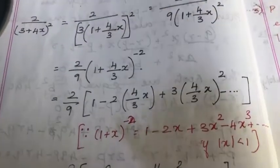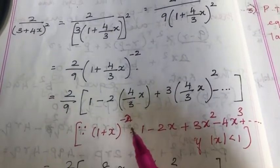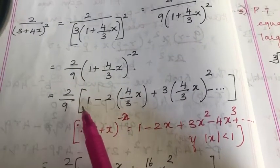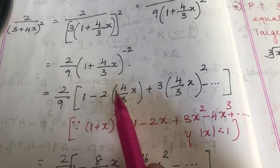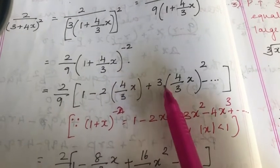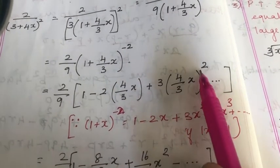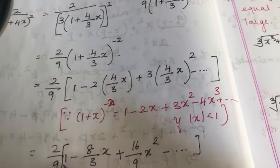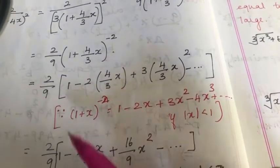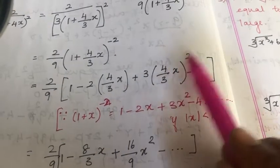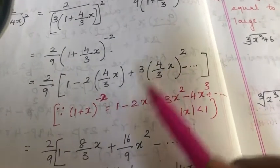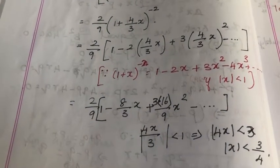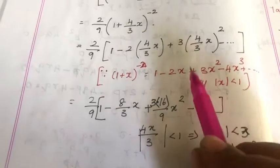For (1 + x)^(−2), we can expand this. So (2/9) into [1 − 2·(4x/3) + 3·(4x/3)²]. That is (2/9) into [1 − 8x/3 + 3 · 16x²/9]. So 3 into 16 divided by 9 gives the x² coefficient.